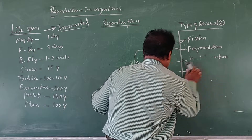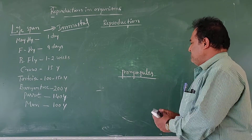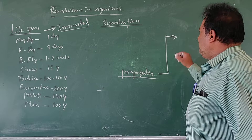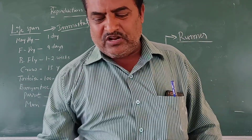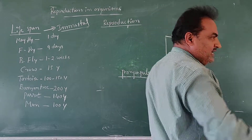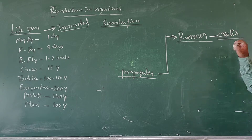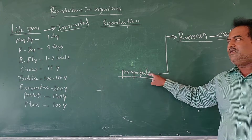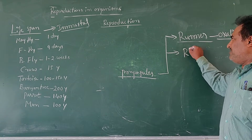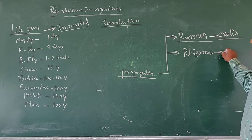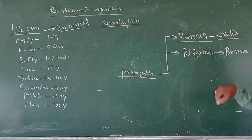In angiospermic plants, there are different types of propagules. For example, one kind of propagule is called a runner. The runner is involved for the production of a new plant body. The best example for a runner is Oxalis. Another propagule is rhizome. Rhizome commonly occurs in the case of banana plant and ginger.